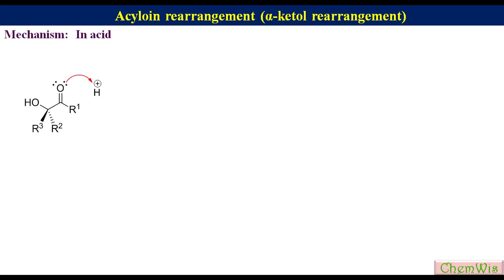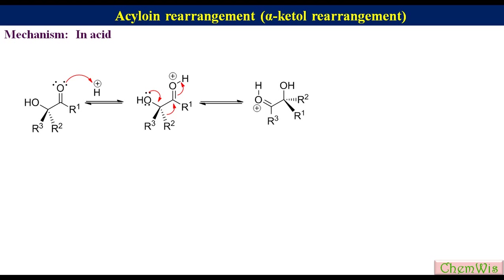In acidic conditions, the carbonyl oxygen undergoes protonation to form an oxonium ion, which undergoes migration of the group having greater migratory aptitude from the alpha carbon to the carbonyl carbon. This produces a rearranged oxonium ion, which after deprotonation gives the rearranged product.